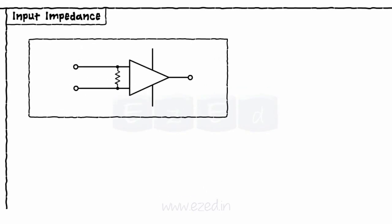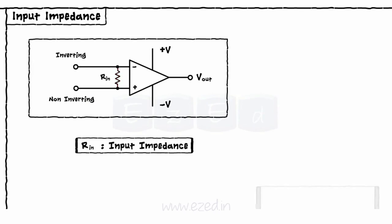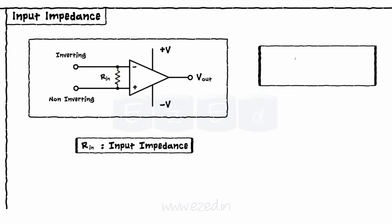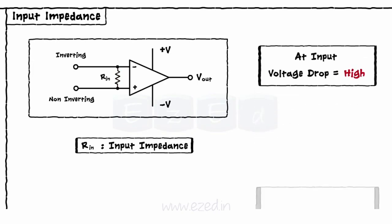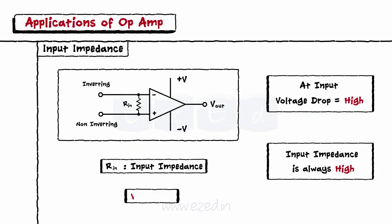The second term is input impedance — the resistance offered by the input terminals of an op-amp. The voltage drop at the input of an op-amp must be very high. Hence, the input impedance of an op-amp is always very high, due to the equation V equals I into R.